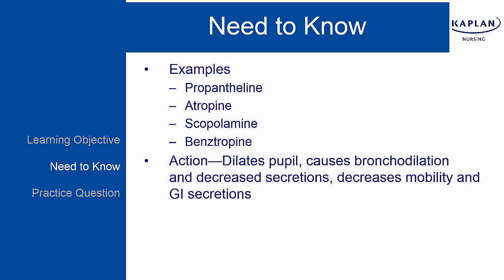Anticholinergics work by competing with acetylcholine at receptor sites in the autonomic nervous system. They cause relaxation of the ciliary muscles and dilation of the pupils. They also can cause bronchodilation and decrease bronchial secretions.